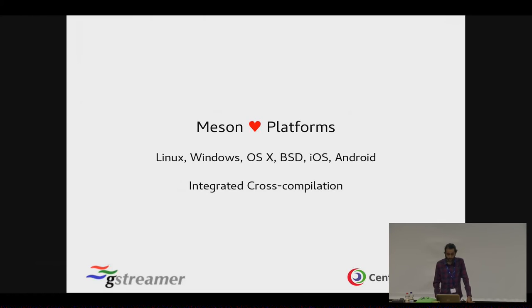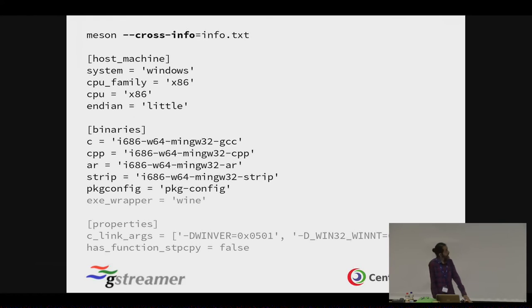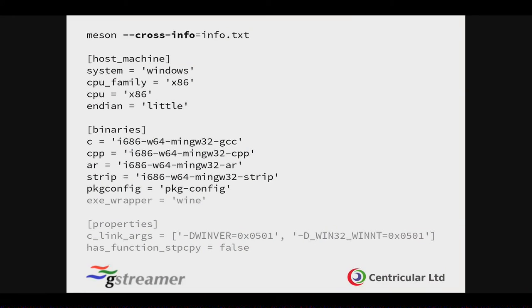We support all the platforms GNOME and GStreamer care about. Cross-compilation works better than AutoTools. Unlike having to specify variables and environment variables on a command line, you can just have a single cross-info file specifying the system, CPU, and available binaries. There's an optional properties section where you can specify which functions are available, so you don't have to run a test binary when cross-compiling. But if you do want to run a binary, we also have an exec wrapper.